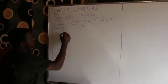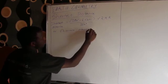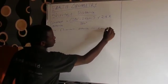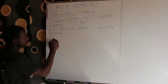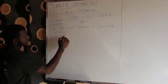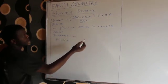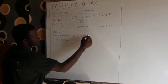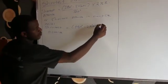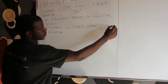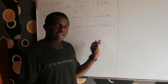So let me just write these formulas. Shortest distance in nautical miles is equal to 180 degrees minus 2 multiplied by the latitude, multiplied by 60 nautical miles. This is the formula that we use, so let me just give an example.